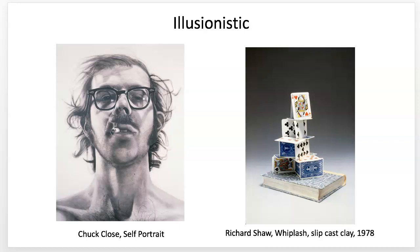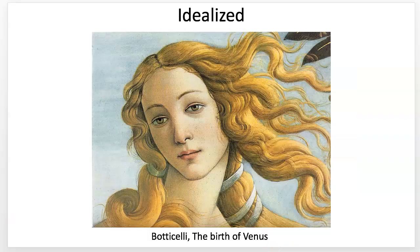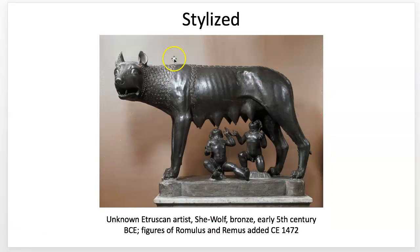Illusionistic takes it another notch to where we almost believe it — this nearly looks like a photograph but is a charcoal drawing, and these look like cards stacked on a book but are slipcasts in clay, cast into molds, painted, silkscreened, and fired. Idealized is depicting standards of beauty generally agreed upon in a culture, which changes across time periods and parts of the world. Stylized is when things become geometric that wouldn't normally be — like hair on a wolf becoming geometric.